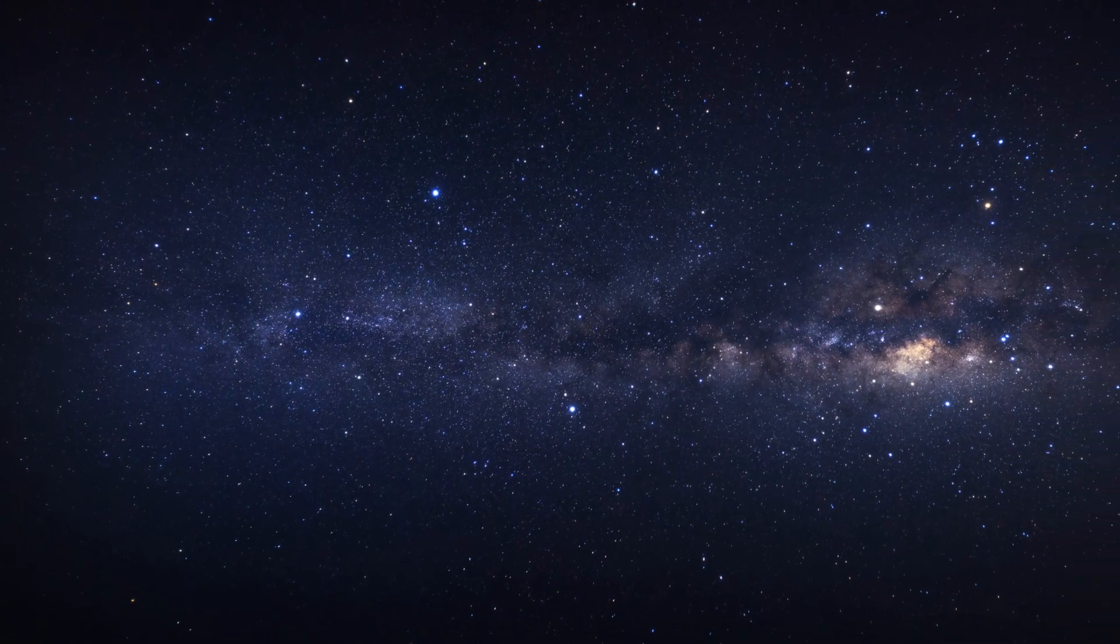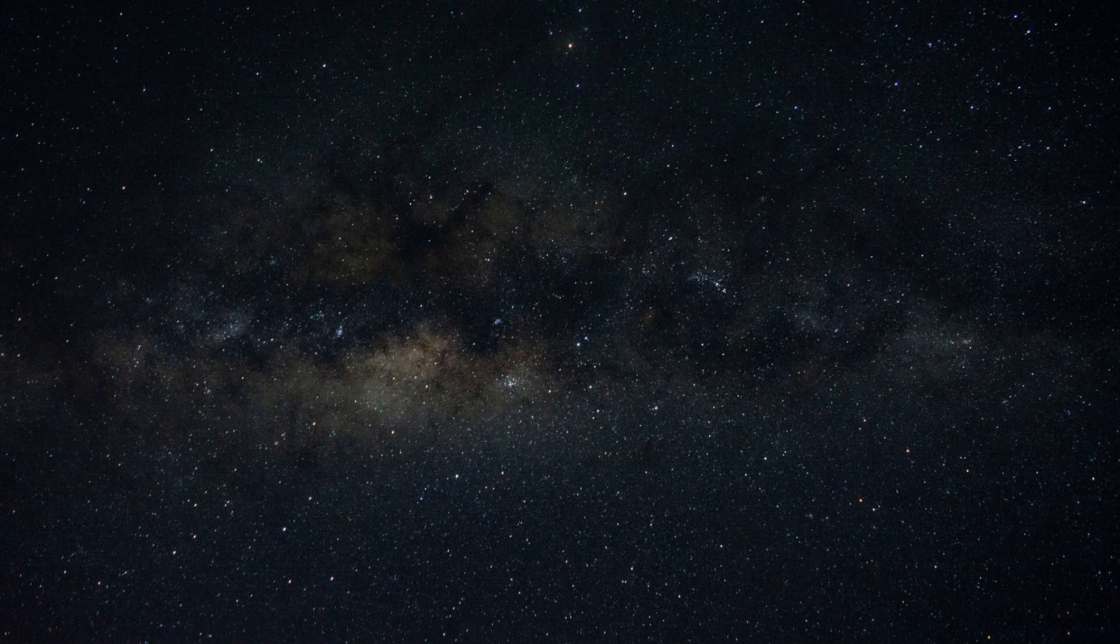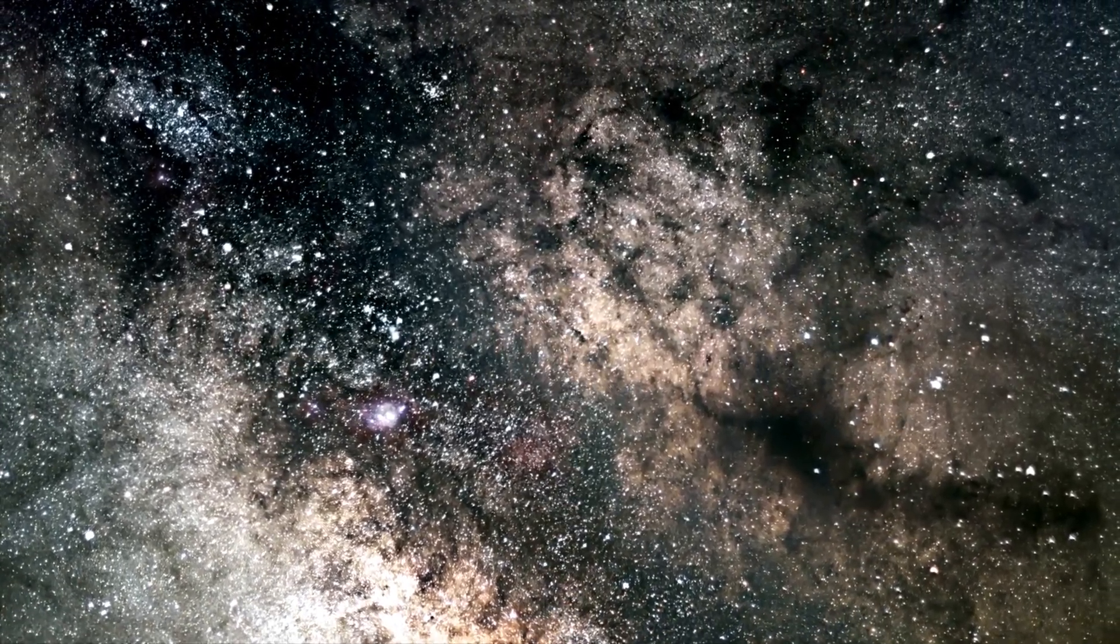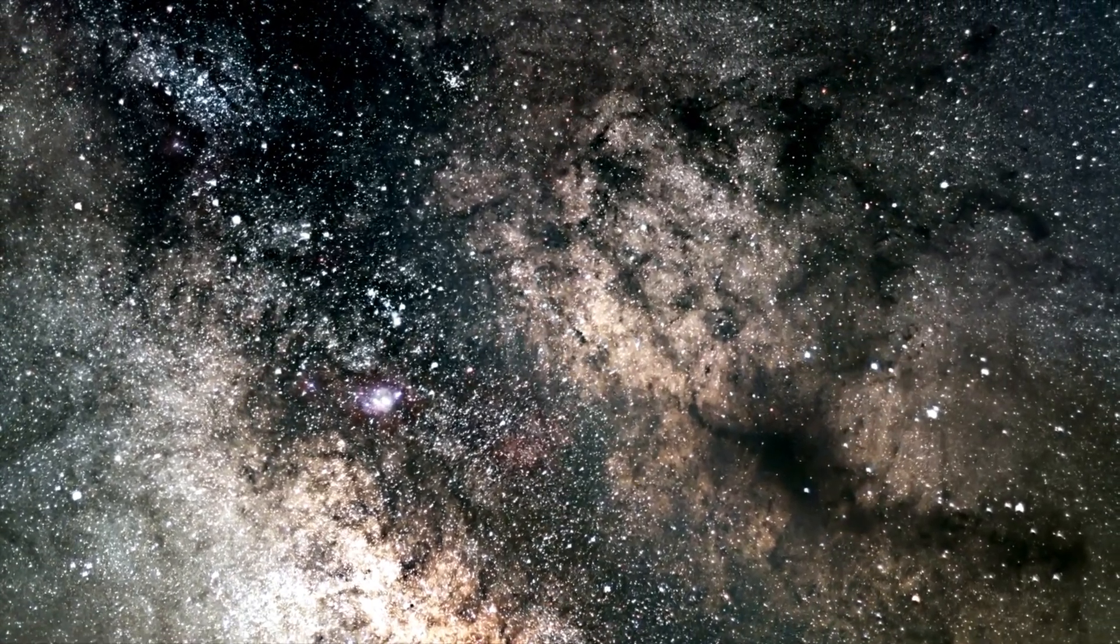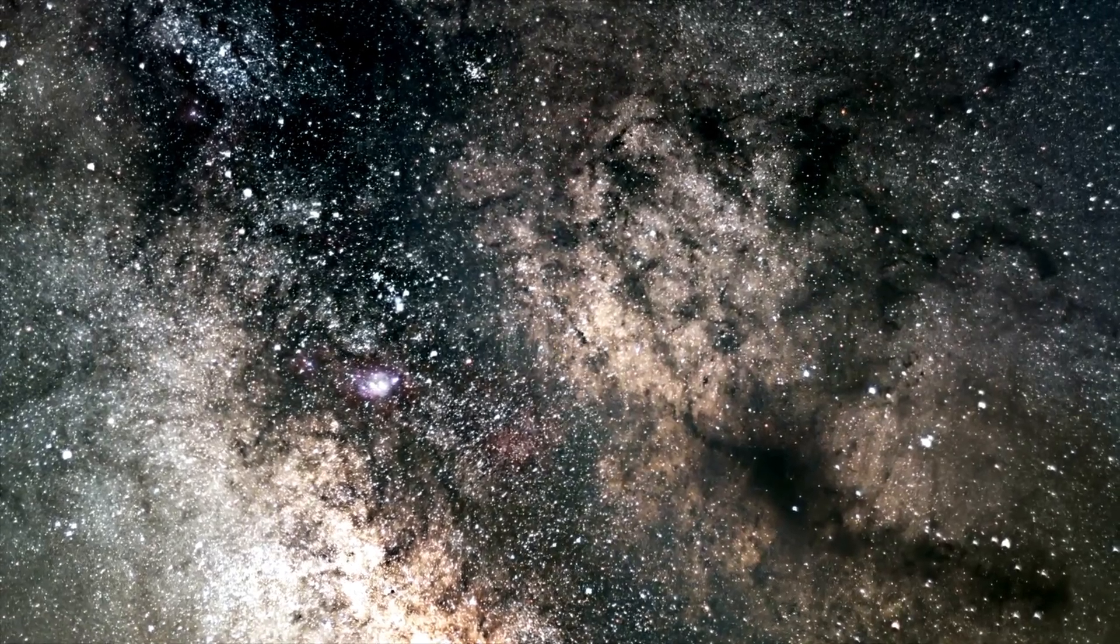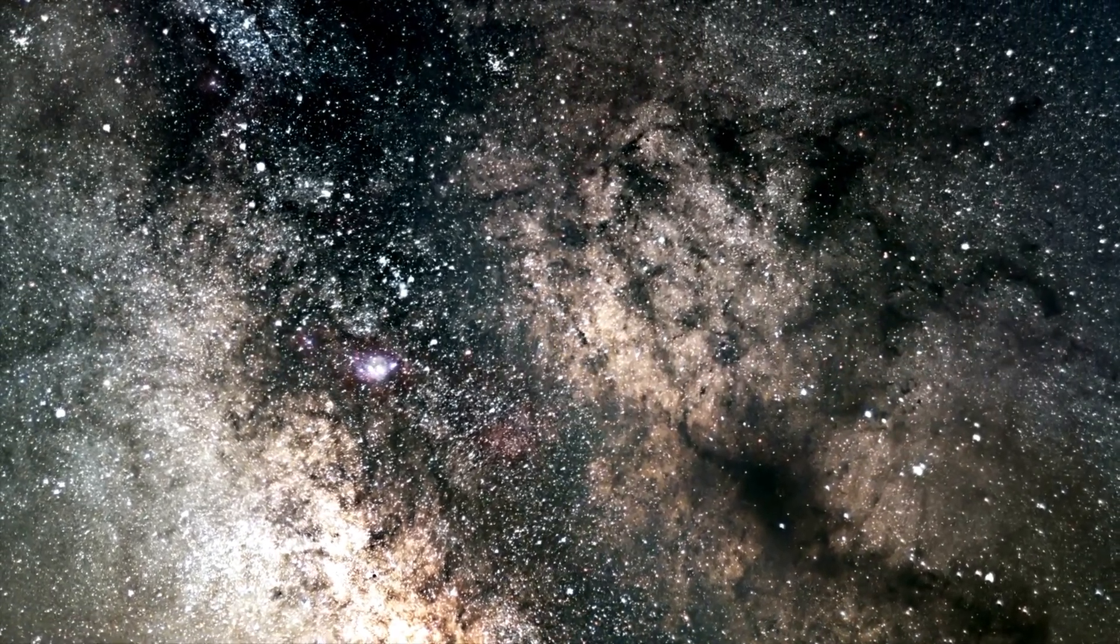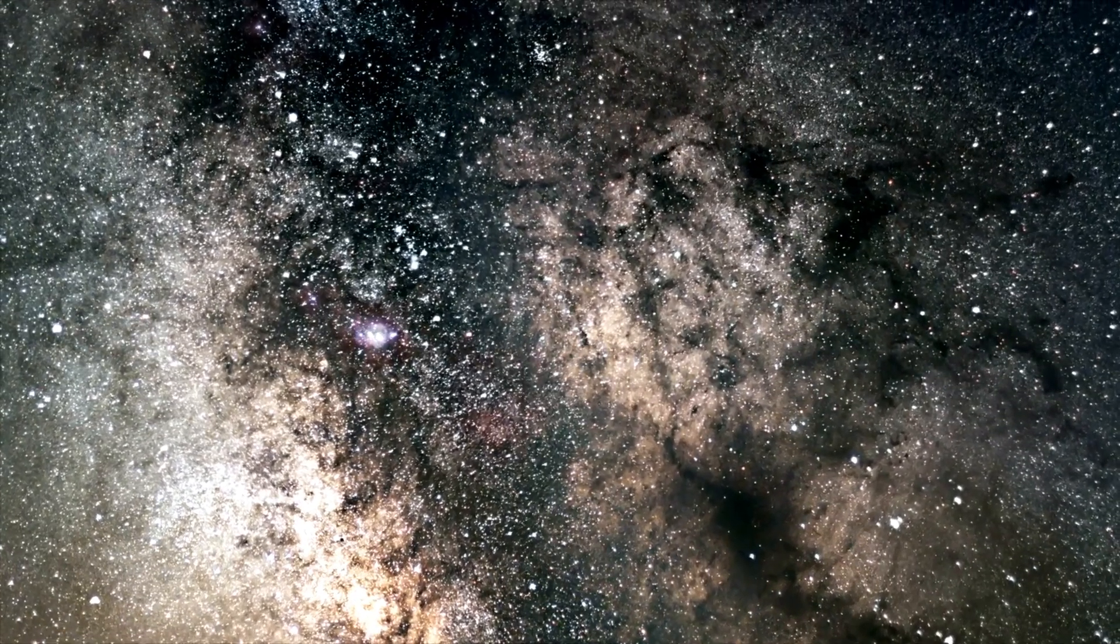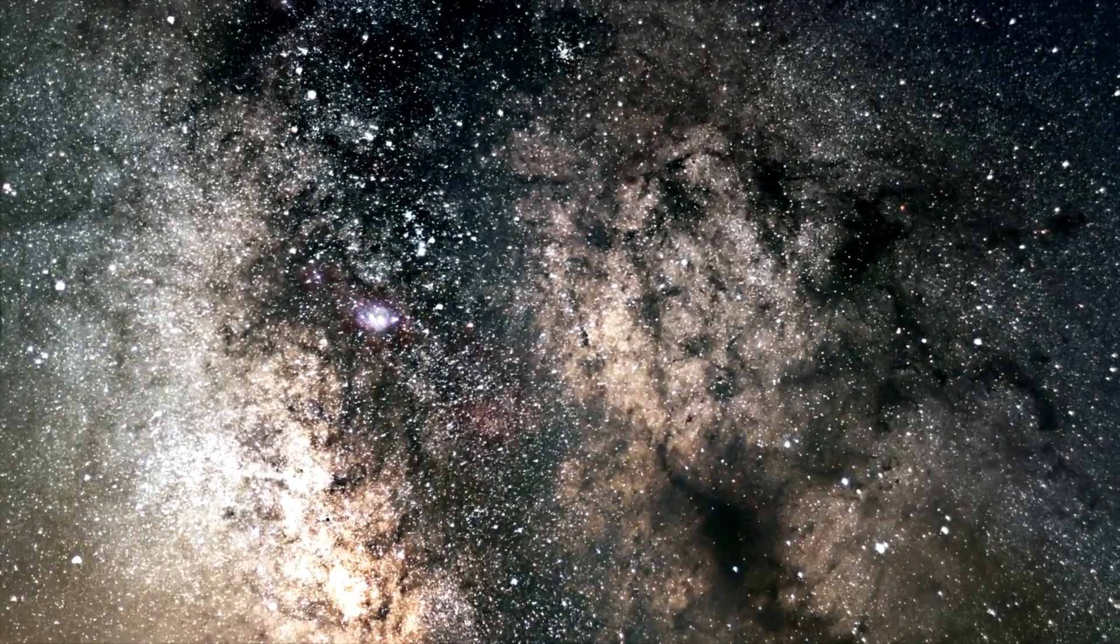Our very own galaxy, the Milky Way, is a sprawling cosmic metropolis. It spans about 100,000 light-years across, and it's home to a dizzying array of around 200 billion stars. If we were to travel at the speed of light, it would take us 100,000 years to cross from one side to the other. Just imagine that.